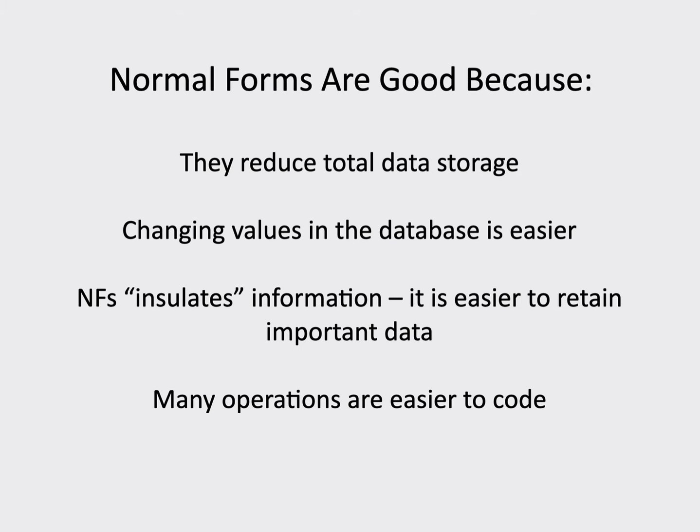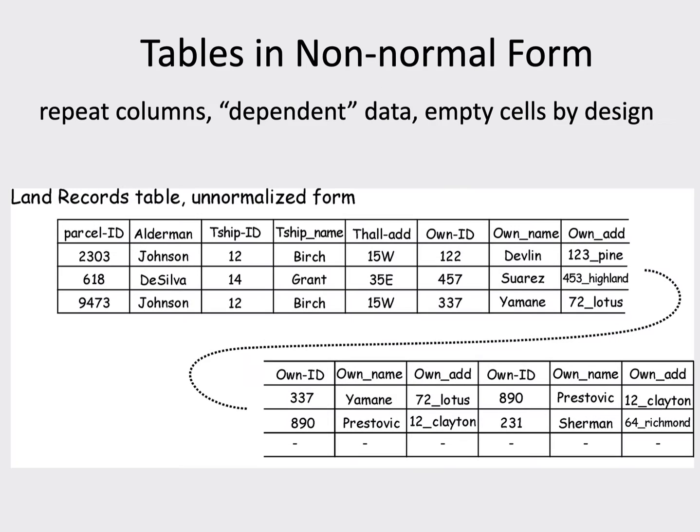Normal forms are good because we can reduce the total storage. We can isolate pieces of the data so we can change values easily. It's easy to retain important data — if things get deleted in one table, information that isn't related to the stuff we want to delete is still saved in another table. And it makes operations relatively easy to code.